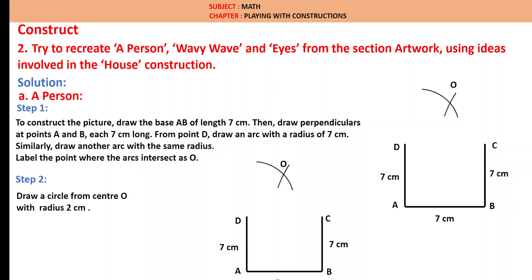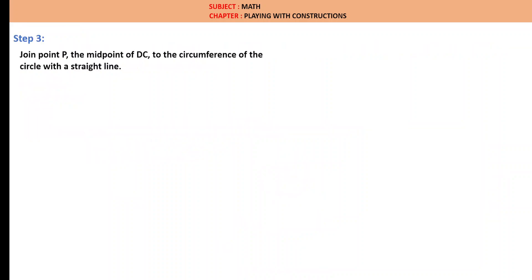Step 2: Draw a circle with center O with radius 2 cm and also an arc of CD passing through C and D with radius 7 cm. Step 3: Join point P, the midpoint of DC, to the circumference of the circle with a straight line. Therefore, this is the required shape which is in the form of a person with the head and body.